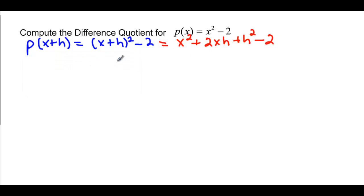So that's our p of x plus h. Now we're going to do the difference quotient here. So we have x squared plus 2xh, plus h squared, minus 2. That's my p of x plus h. And then minus my p of x, which is x squared minus 2, and it's all over h.